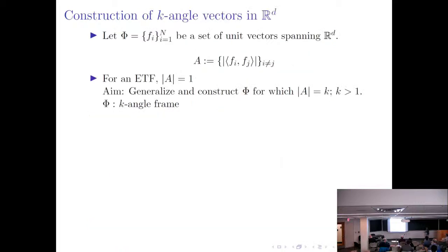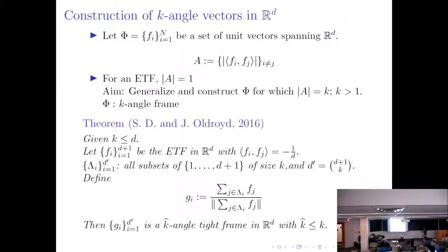Now we want to think about generalizations. We have a set of unit vectors which is a spanning set in R^D, and we look at the set of all possible inner products between distinct vectors. For an ETF, this set has size 1 — there is only one angle. Our aim is to construct vectors for which this set has size k, where k is preferably small but greater than 1. Such sets are referred to as k-angle frames.